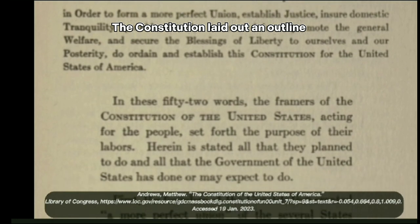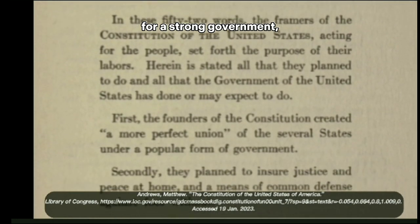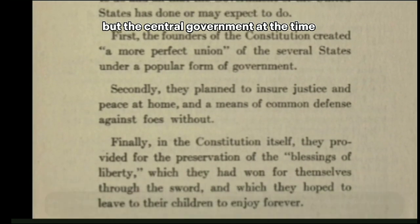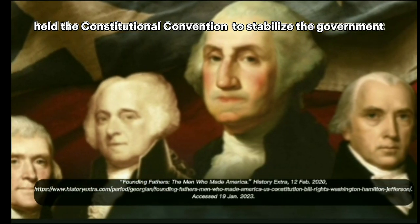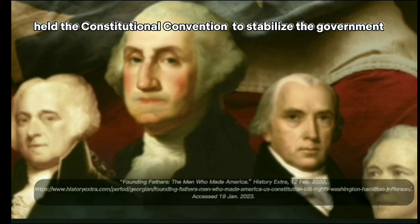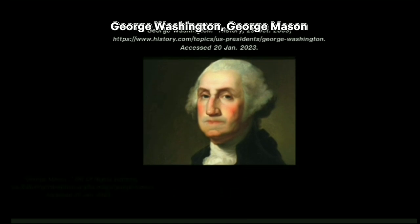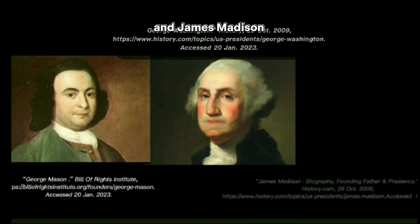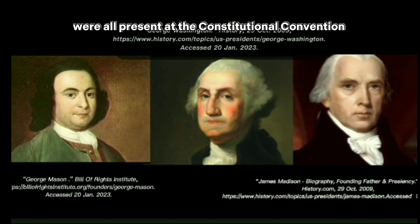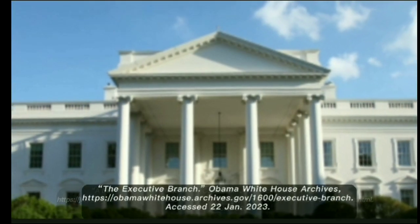The Constitution laid out an outline for a strong government, but the central government at the time was very weak, so our founding fathers held the Constitutional Convention to stabilize the government. Many founding fathers, such as George Washington, George Mason, and James Madison, were all present at the Constitutional Convention. The topics that were discussed at the Convention consisted of representation in Congress, the new executive plans, and slavery rights.